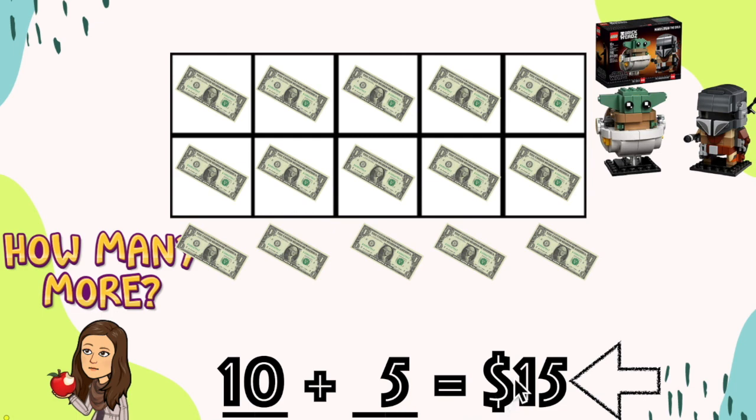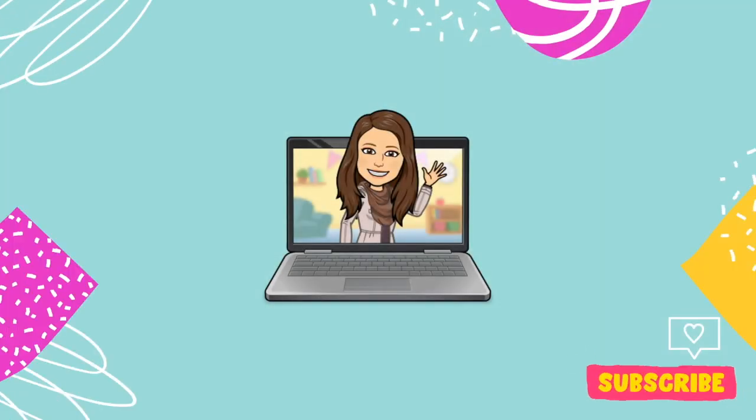Once you have five more dollars, you can buy your Lego set. And that's how you make the numbers 14, 15, and 16 using the number 10. If you found this video helpful, don't forget to like and subscribe. We'll see you next time. Bye.